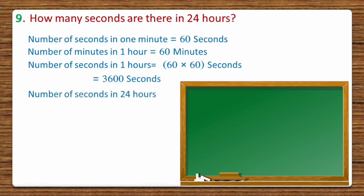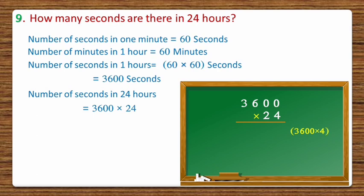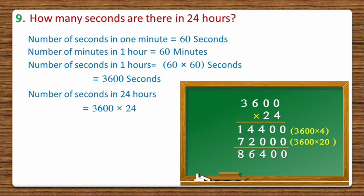Now dear students, we have to calculate the number of seconds in 24 hours, and for that we'll multiply 24 with 3,600. In 24, there are 2 tens (20) and 4 ones. First we multiply 3,600 with 4 ones to get 14,400, then multiply 3,600 with 20 to get 72,000. On adding both values we get the answer 86,400 seconds in 24 hours.